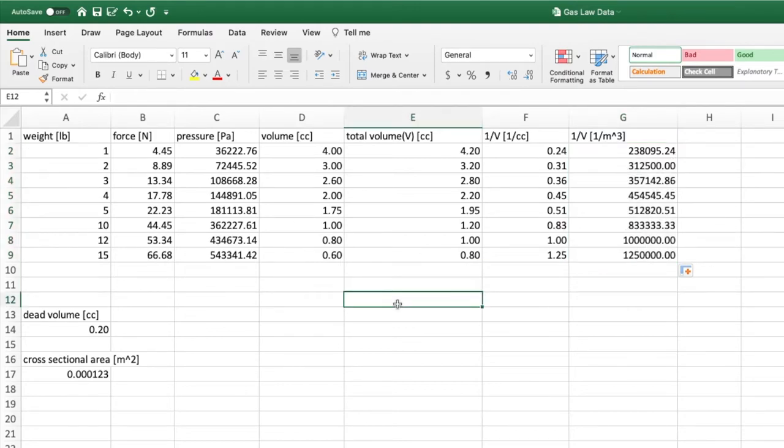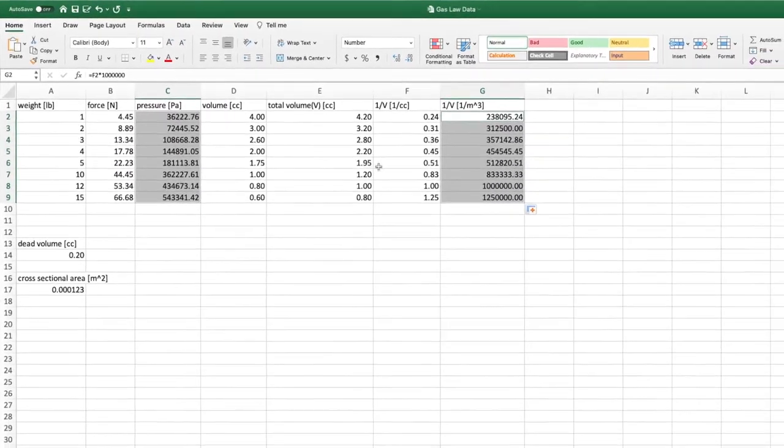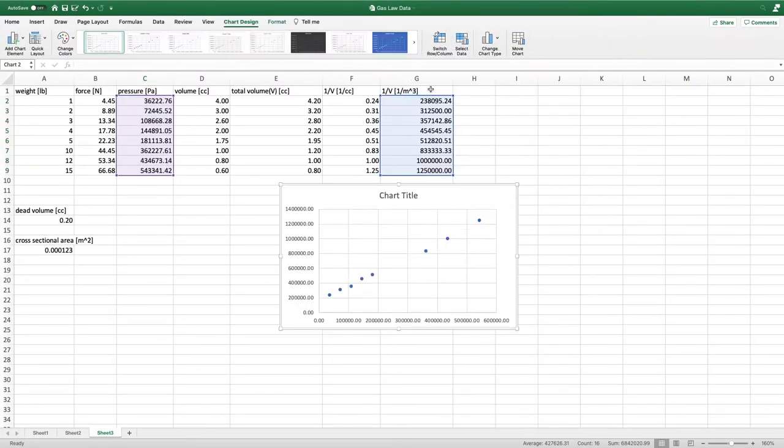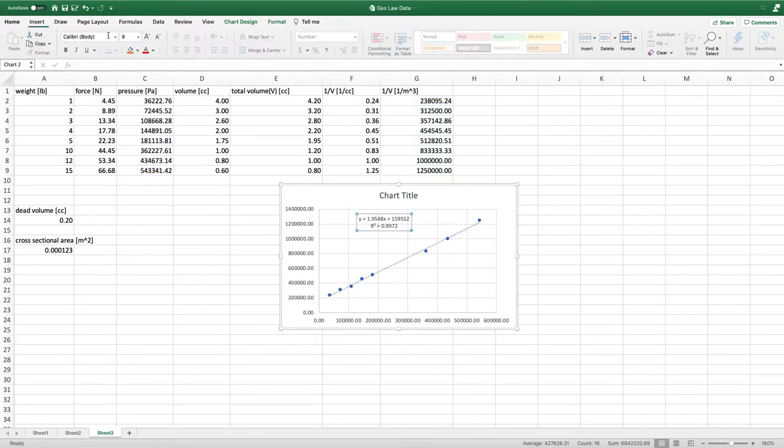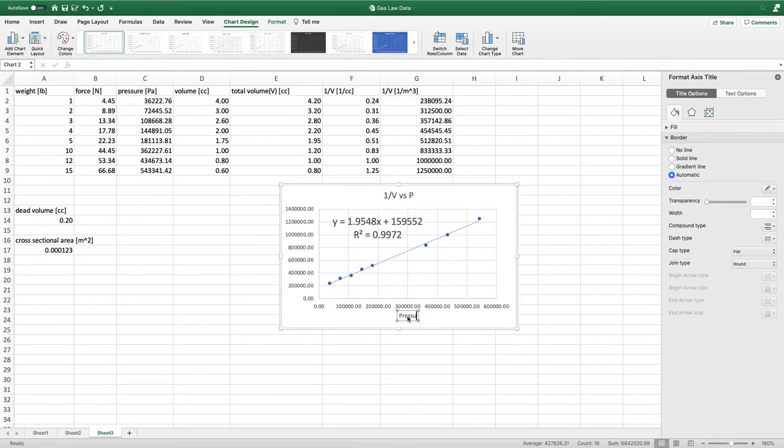Now that we have our columns for 1 over volume and pressure, we can make our graph. Add a best fit line with an equation and correlation coefficient. And don't forget to title your graph and label your axes.